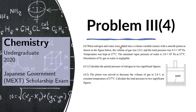When nitrogen and water were added into a volume variable reactor with a smooth piston as shown in the figure below, the volume of gas was 3.0 liters and the total pressure was 4.3 × 10⁴ Pascals. Temperature was kept at 27°C. The saturated vapor pressure of water is 3.0 × 10³ Pascals at 27°C. Dissolution of nitrogen gas in water is negligible.